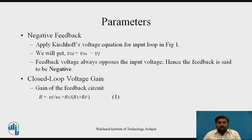The first parameter is negative feedback. It is called negative feedback because whatever output voltage you use as input to the feedback circuit, the output of the feedback circuit is connected as input to the inverting terminal of the op-amp. Due to this, the overall input applied to the op-amp degrades, so the input voltage is less compared to the previous one.